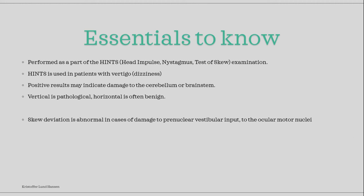Now we'll go through some essential knowledge and repeat some important points. This test is performed as part of the HINTS exam, which includes head impulse, nystagmus, and test of skew. HINTS is used in patients with vertigo — that is, dizziness where the room feels like it is spinning. A positive result may indicate that there is some damage to the cerebellum or the brainstem. Vertical misalignment is pathological, while horizontal is often benign. Skew deviation is abnormal in cases of damage to the pre-nuclear vestibular input to the ocular motor nuclei.